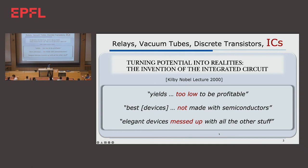The early days of computing were dominated by relays, vacuum tubes, and discrete transistors — really, really early days of computing. And then came these things that we use today, the integrated circuit chips. Jack Kilby proposed what he called the monolithic idea, and the revolution started.